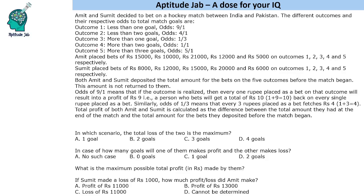Amit places bets of certain rupee amounts on outcomes one, two, three, four, five. Sumit places bets of different amounts on those outcomes respectively, and both deposited the amount for the bets on all five outcomes before the match began. Each of them bet on all five outcomes because based on the outcome, it will decide whether they will make profit or loss.